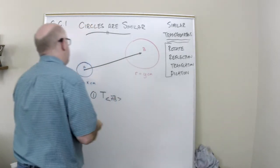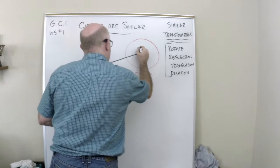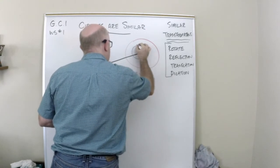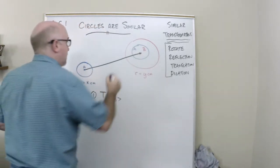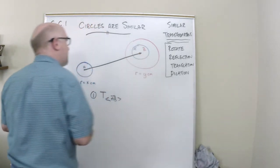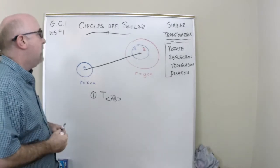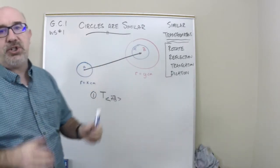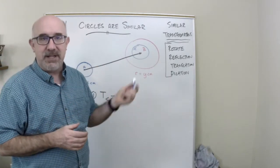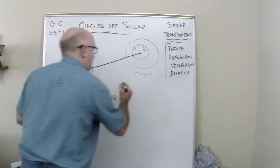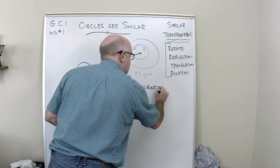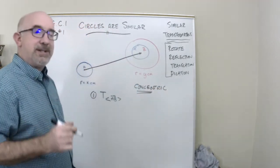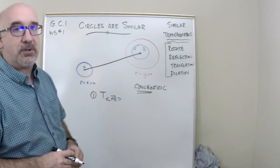When that happens, we get circle A sitting right about here. Circle A prime, I guess, circle A prime, because it's moved value. Now, when two circles share the same center as these do, that term is called concentric. Two circles using the same center are concentric circles.